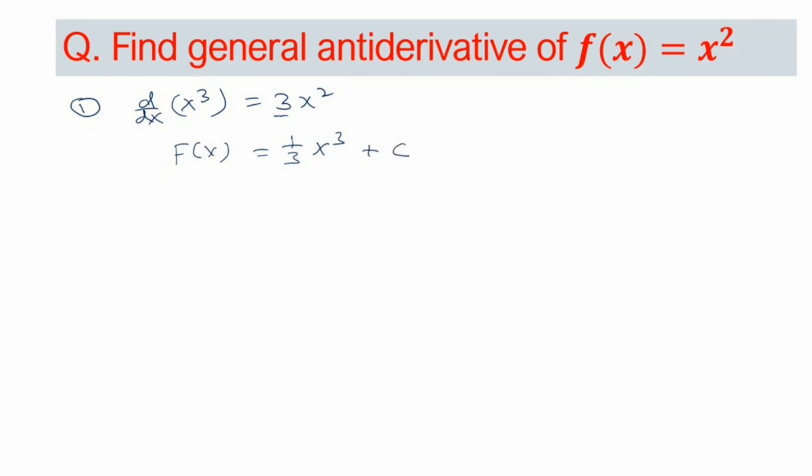This is the way you get the anti-derivative. Now to test if our answer is correct, you will see that f'(x) equals d/dx of 1 over 3 x to the power 3 plus d/dx of c. This equals 1 over 3 times 3x squared plus 0, which equals x squared, the given function.